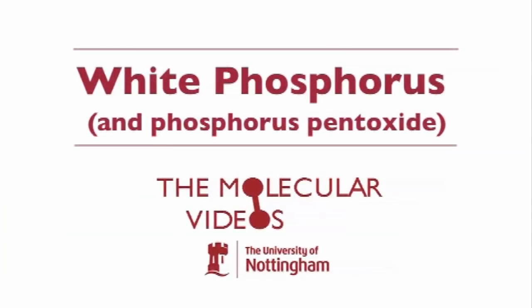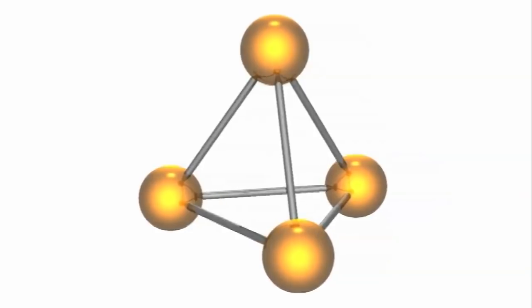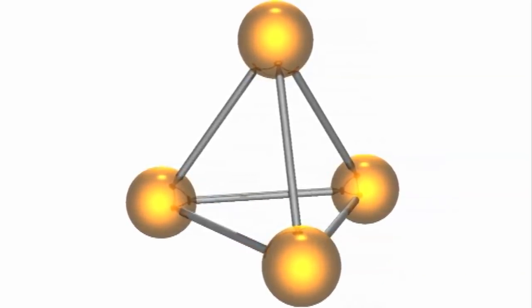We're going to look at phosphorus, one of the allotropes of phosphorus, white phosphorus. It's a very, very strained molecule, very energetic. There are four atoms of phosphorus bonded together to form a pyramidal structure or a tetrahedral structure which we know as P4.